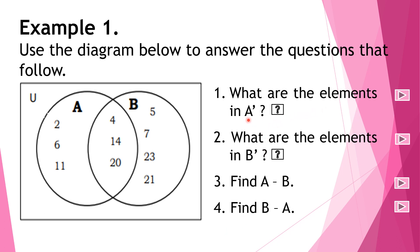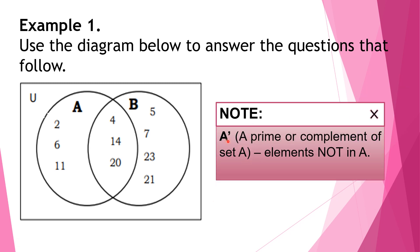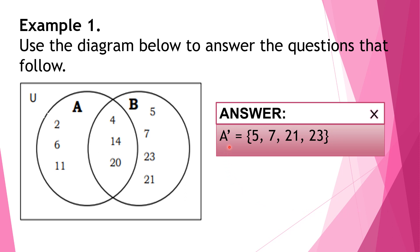What are the elements in A prime? A prime, or the complement of set A, means elements not in set A. So, what are the elements that are not in A? The answer is: A prime is equal to 5, 7, 21, and 23. Remember, when writing the elements, they must be written from lowest to highest number.